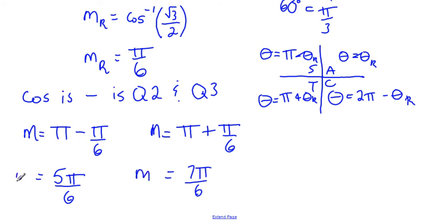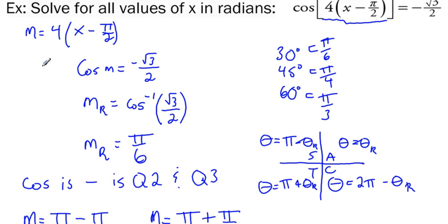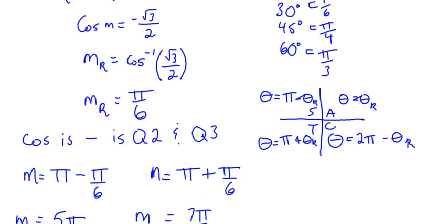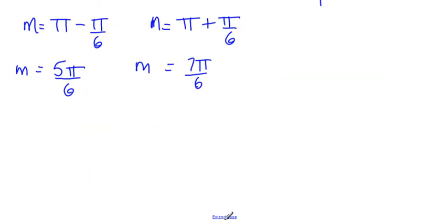Now recognize these are not solutions. What we have now is we have m equal to this guy, so we want values of x. We have m right now, so we have to set these equal to 4 times x minus pi over 2. So I got 5 pi over 6 equals 4 times x minus pi over 2, and I have 7 pi over 6.